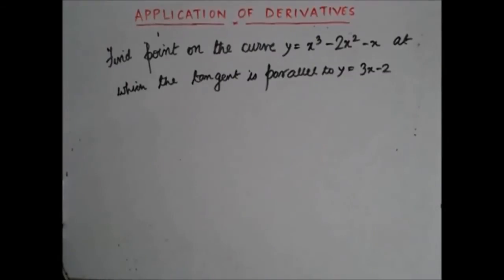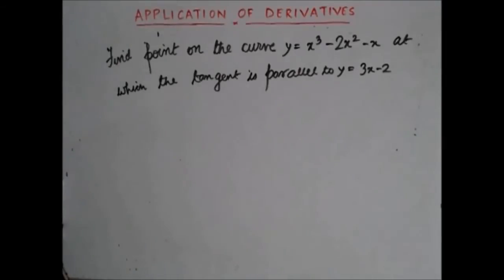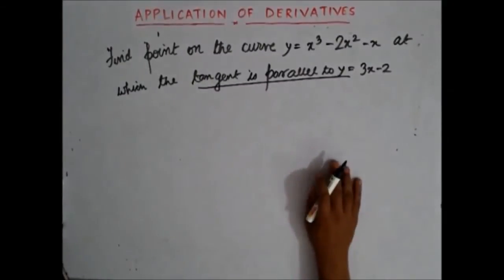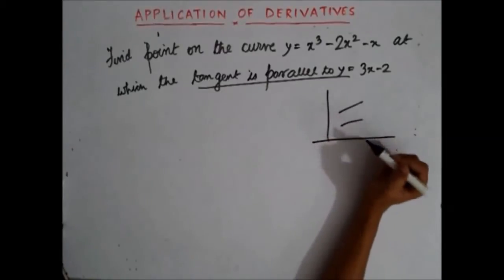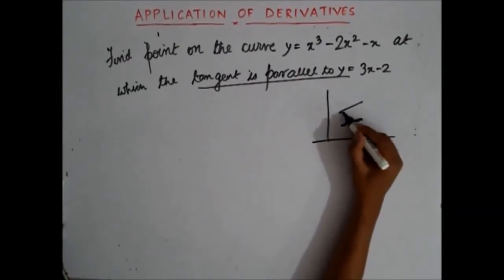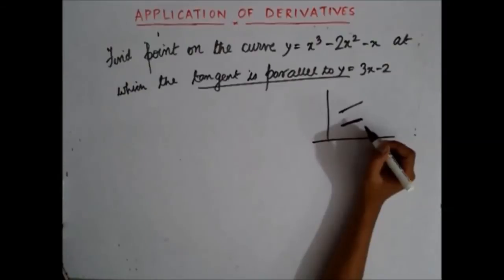Given that you have the question before you, I request you to pause the video and try the question on your own. Once you have done the problem, try to see the solution. Assuming that you have solved the question, now let's see how the solution works. If two straight lines are parallel to each other, that means both of them have the same slope.